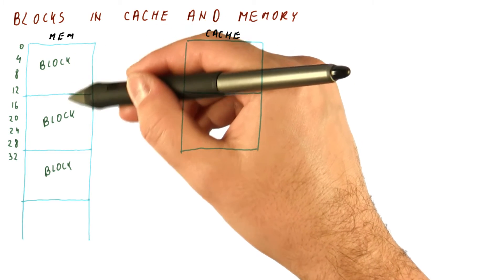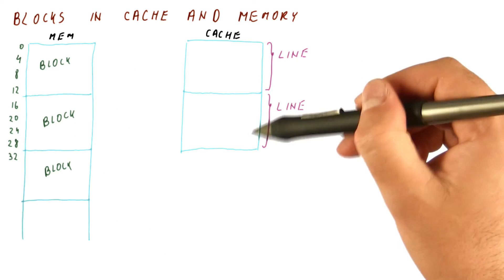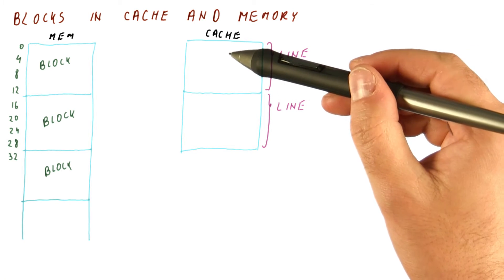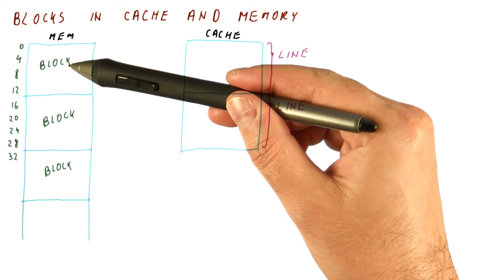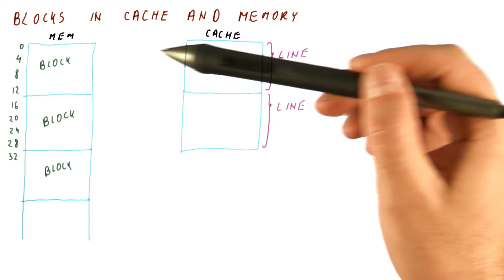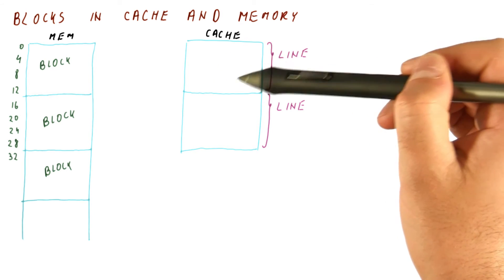So our memory has blocks of data, and our cache has lines which are basically slots where a block can fit. So we can say, for example, that block number zero can be fetched into the cache and placed in line number zero.